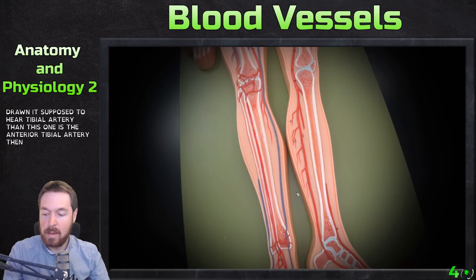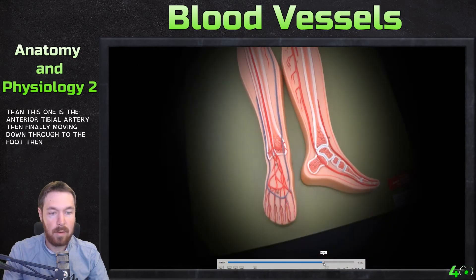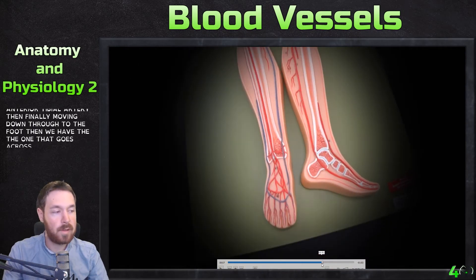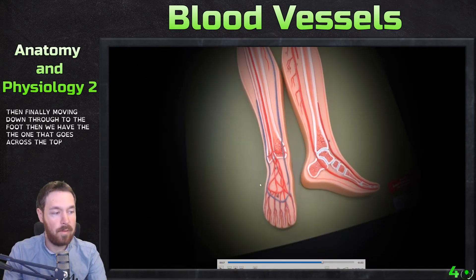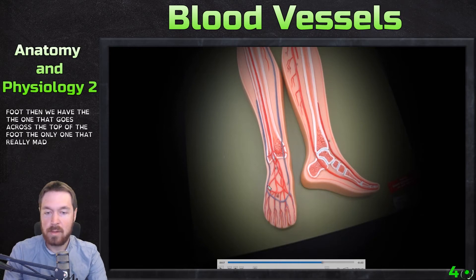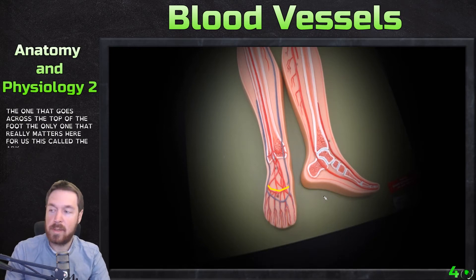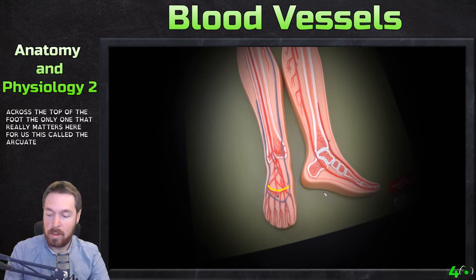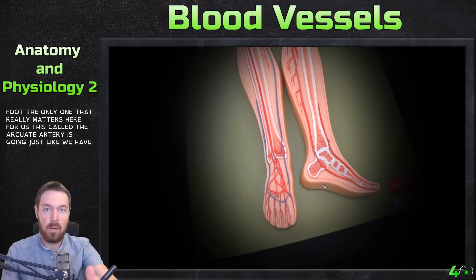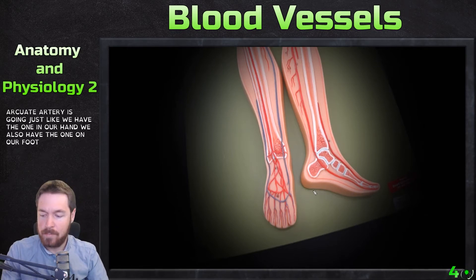Finally, moving down to the foot, we have the one that goes across the top of the foot. The main one that matters here is called the arcuate artery — just like we have an arch in our hand, we also have one on our foot. Those are the arteries.